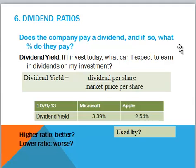The sixth type of ratios is dividend ratios, and they answer the question: does the company pay a dividend, and if so, what do they pay? The dividend yield answers the question: if I invest today, what can I expect to earn in dividends on my investment? The dividend yield takes the dividend the company is currently paying per share and divides it by the current market price per share. So if I bought Microsoft on October 9th, I would expect to earn 3.4% in dividends on what I invest. On Apple, I would expect to earn about 2.5%.